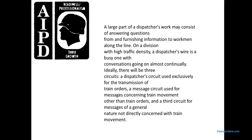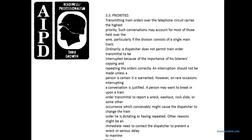The circuit is used exclusively for transmission of train orders. A message circuit is used for messages concerning train movement, and a third circuit handles messages of a general nature not directly concerned with train movement. Transmission of train orders over the telephone circuit carries the highest priority. Such conversations may account for most of the traffic over the wire, particularly on a division consisting of single track.